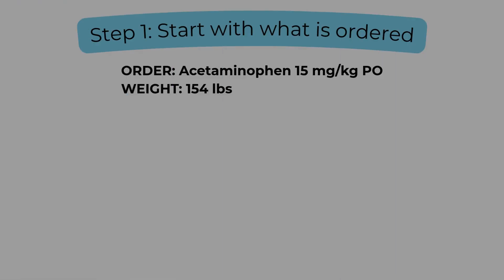Let's break down that first problem step-by-step using our four-step dimensional analysis setup. We'll start exactly where every safe medication calculation begins. Step one: start with what's been ordered. The provider has ordered acetaminophen, 15 milligrams per kilogram by mouth for a 154-pound patient. Because this dose is weight-based, we begin with the patient's weight. We write the first part of our setup as a fraction: 154 pounds over one. This step matters because setting up your first value as a fraction keeps your math structured and consistent, no matter how many conversions come next.